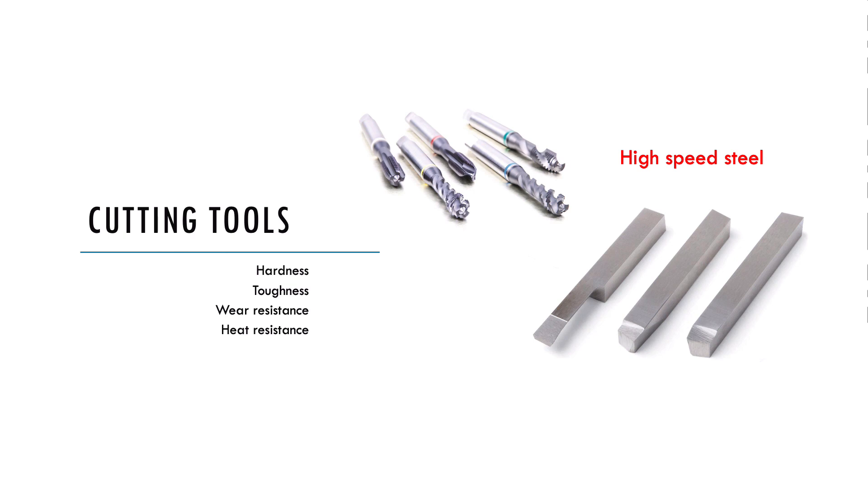Cutting tools should be harder than other metals to cut them. High speed steel exhibits hardness, toughness, and wear resistance properties. These properties enable high speed steel to be used to make cutting tools.